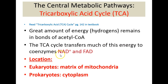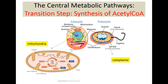The TCA cycle will transfer much of this energy in the form of hydrogen atoms to the electron carriers NAD+ and FAD. The location of the Krebs cycle or TCA is the matrix of the mitochondria in eukaryotes and the cytoplasm in prokaryotes. Remember, the mitochondria is an organelle in eukaryotes which consists of an outer membrane, an inner membrane deep to the outer membrane.